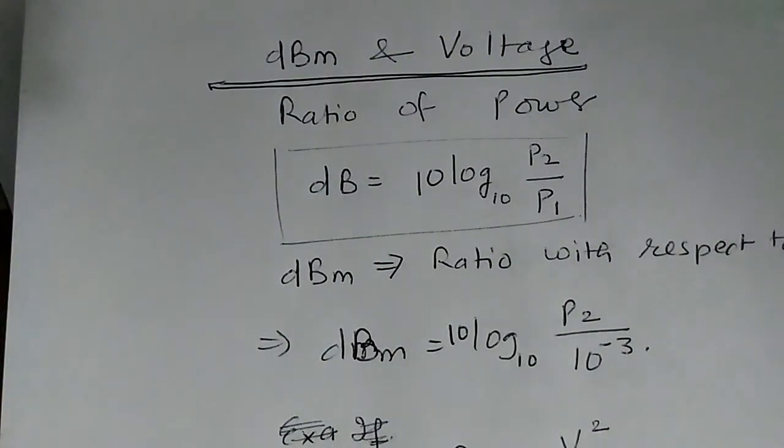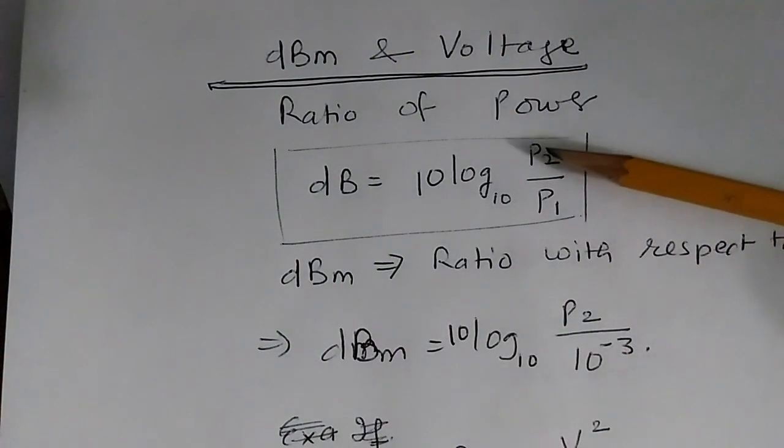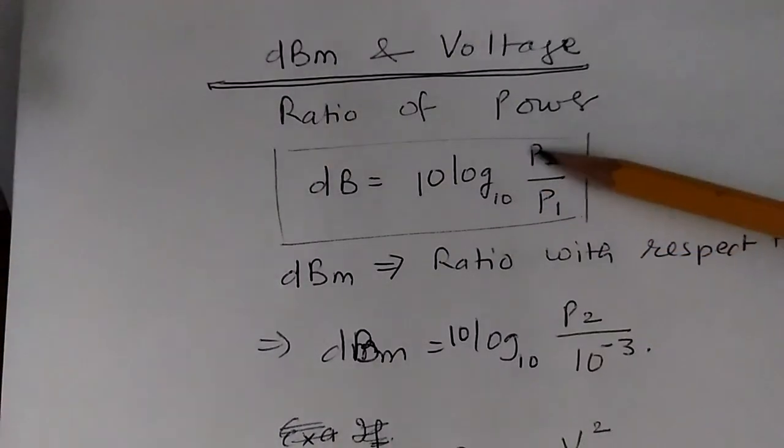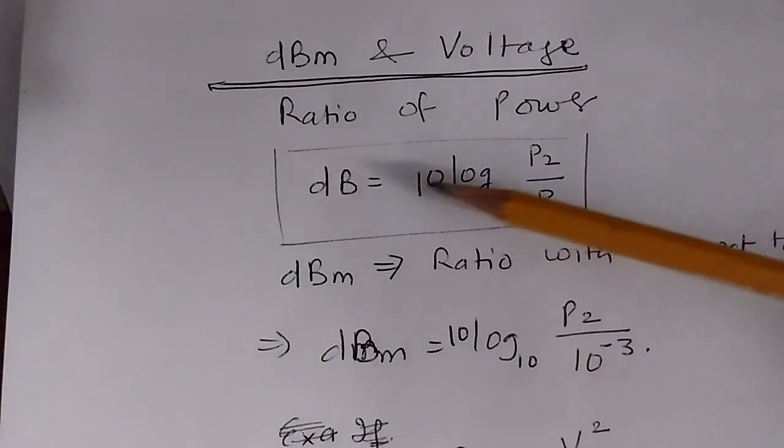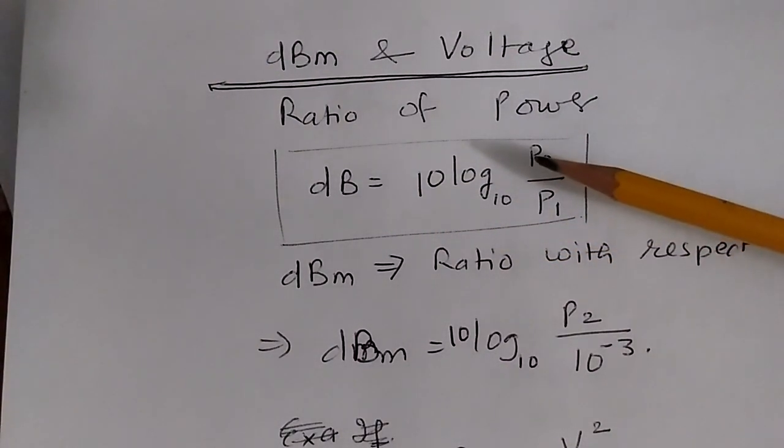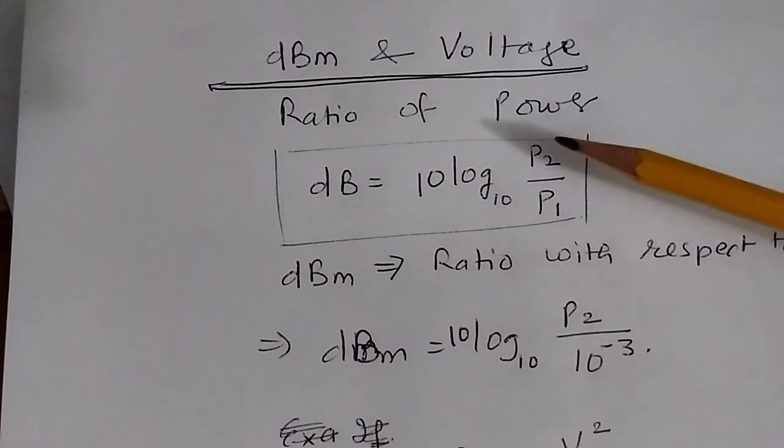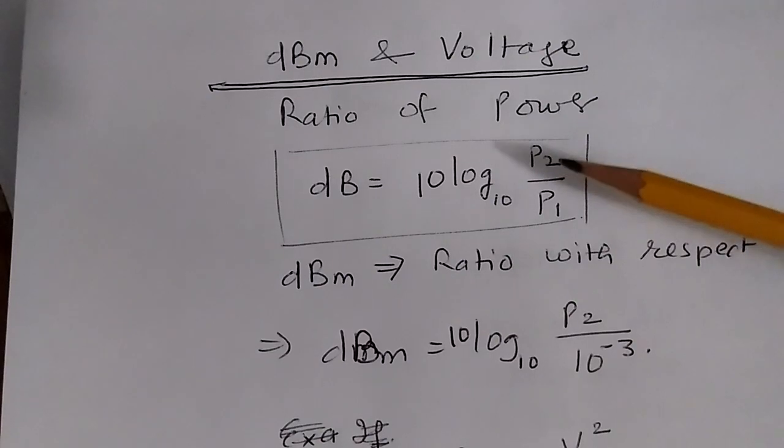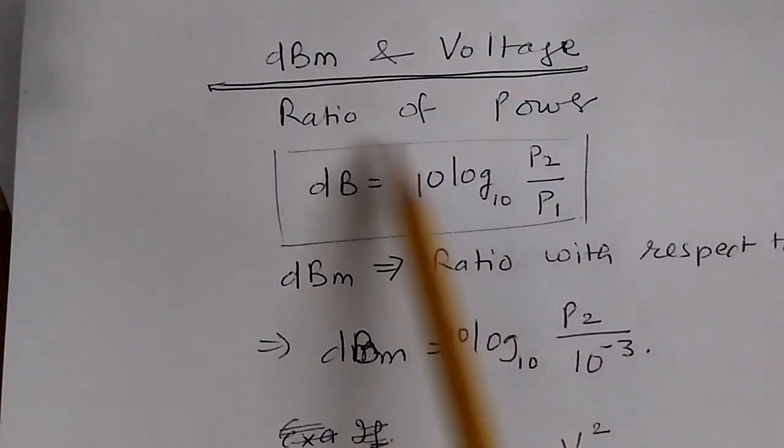For example, if P2 is 10 times P1, then log 10 to base 10 will be 1, and multiplying by 10 gives 10. We call that 10 dB. That means the power increased by 10 dB. In the same way, the power increase in dB can be found by this formula.